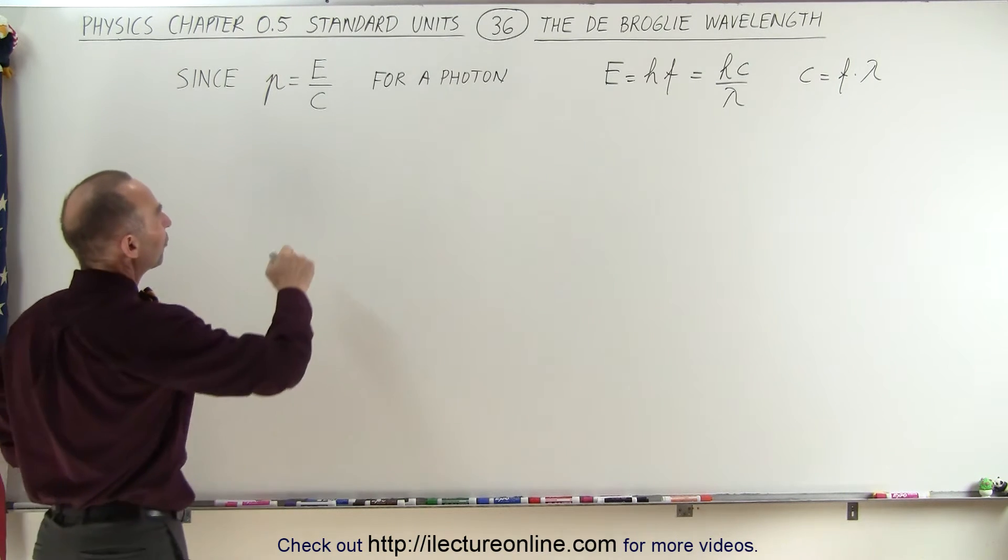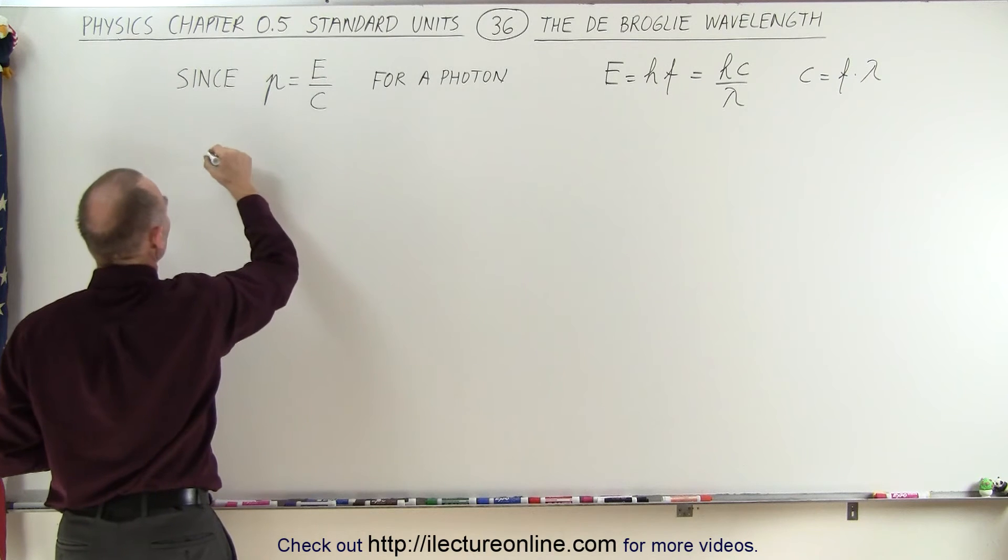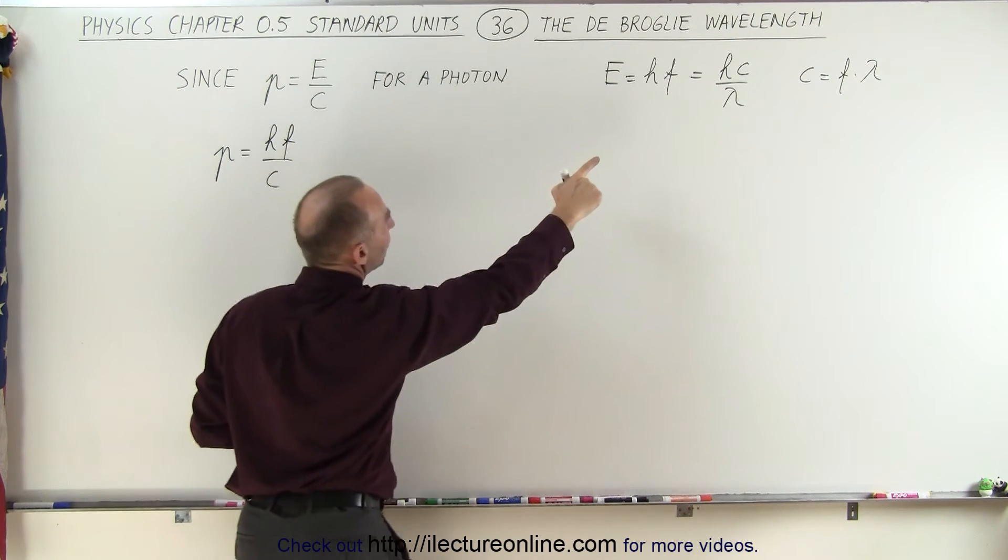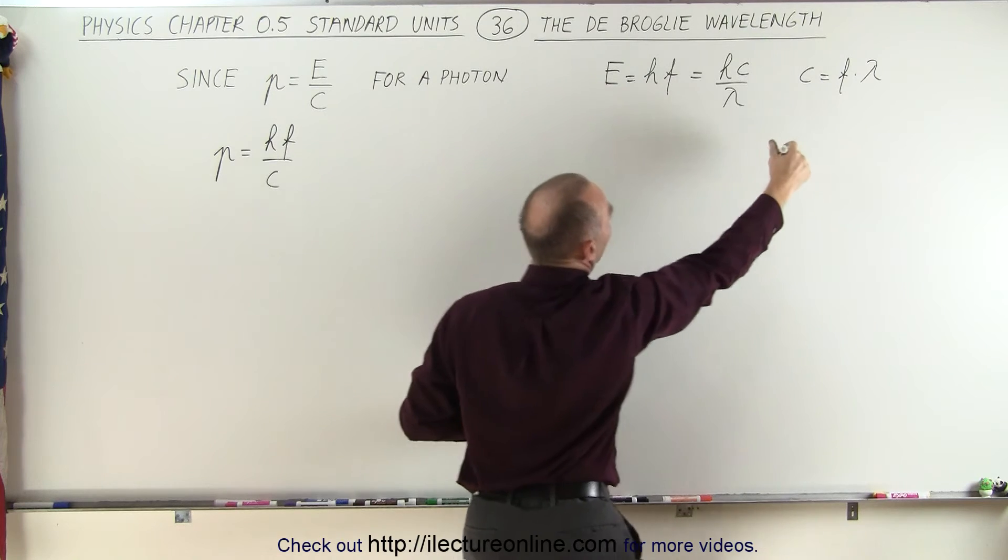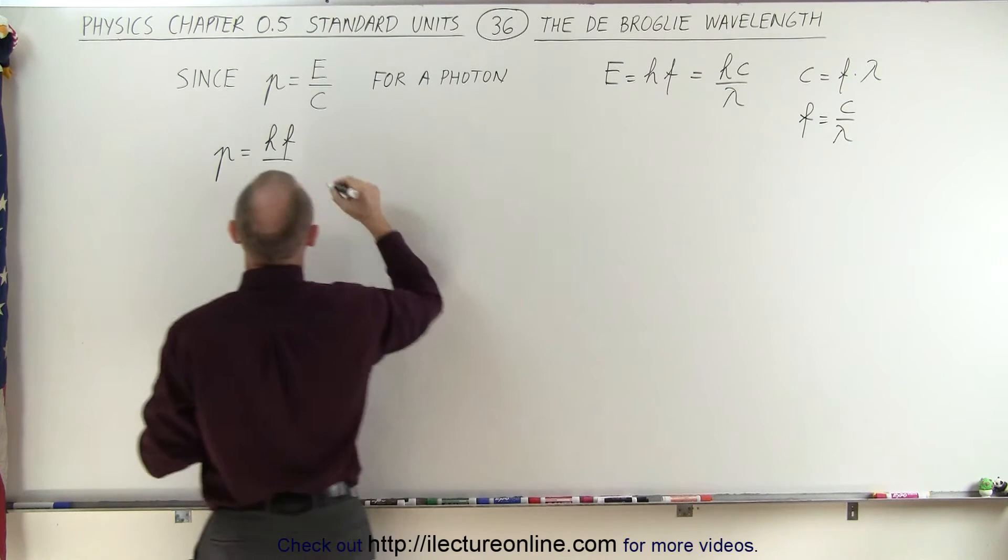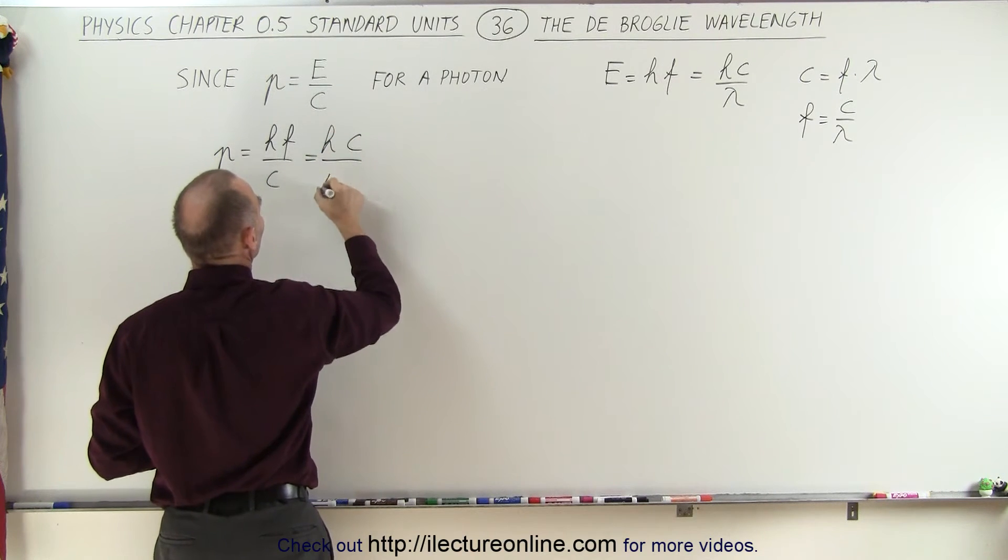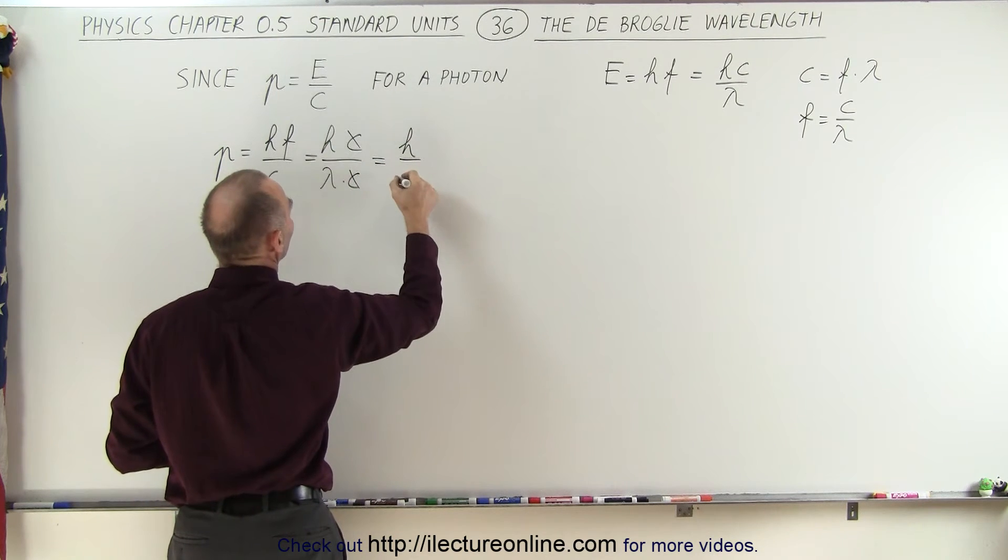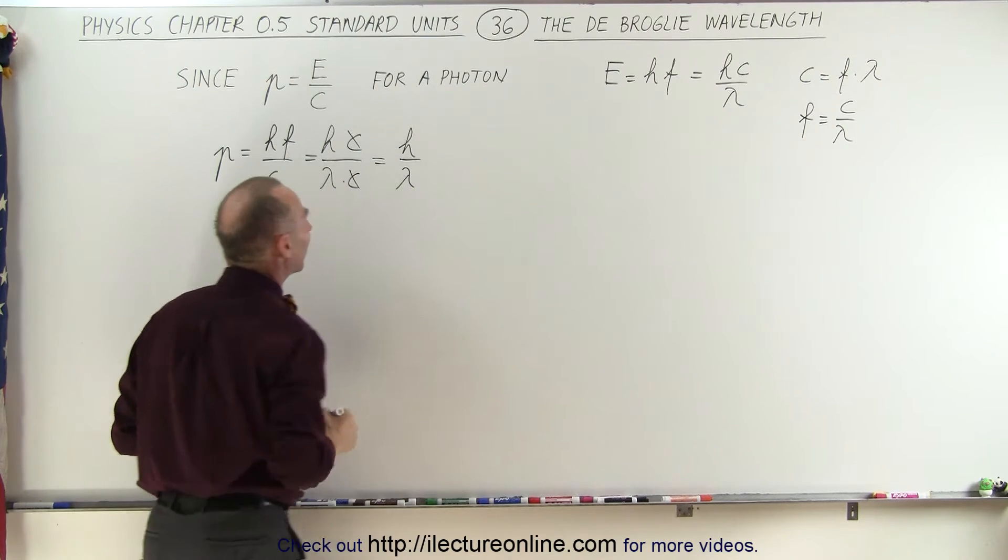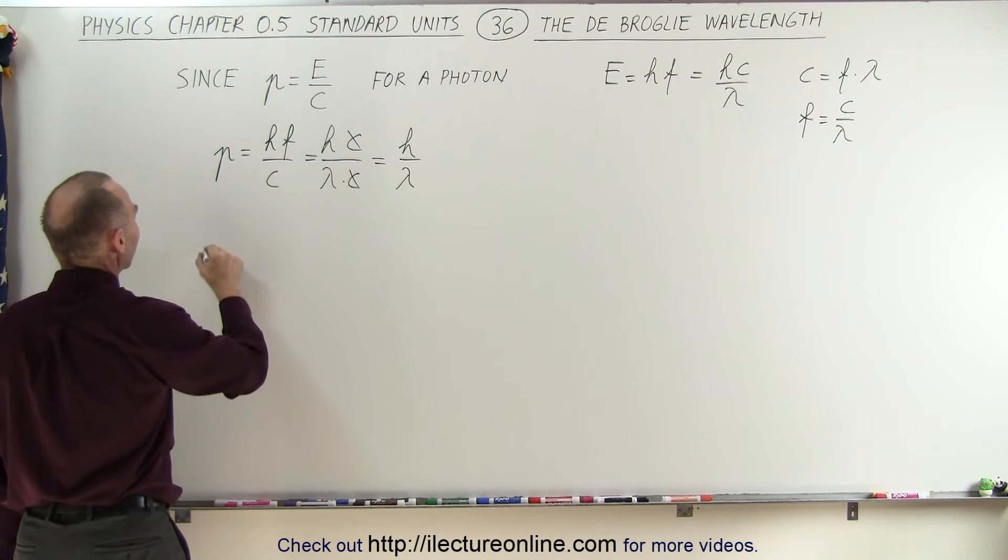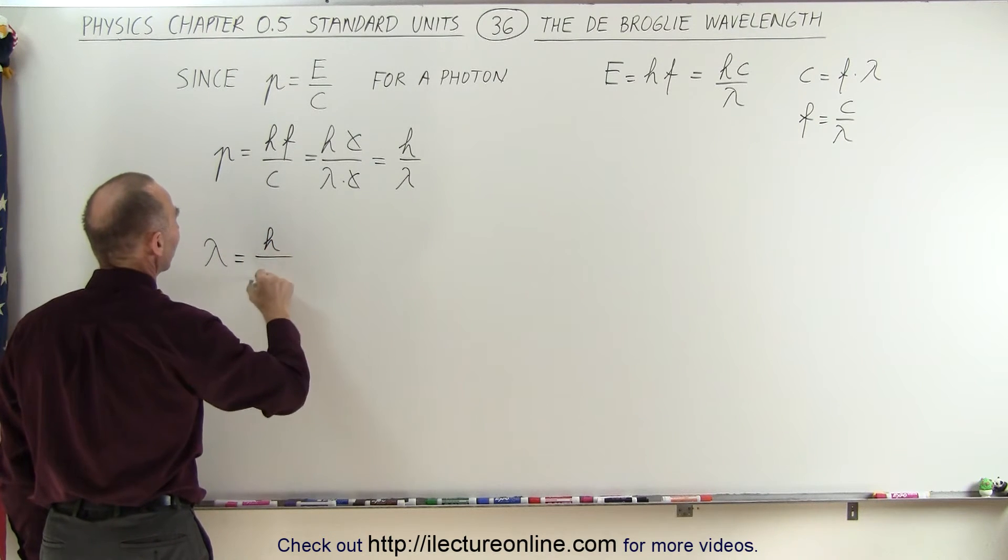Well, let's see how that worked. First of all, we know that energy is equal to h times f, so the momentum of a photon can be written as the Planck's constant times the frequency divided by the speed of light. And since f can be written as c over lambda, we can then write this as h times c over lambda times c, and the c's cancel out, so the momentum of a photon can be written as the Planck's constant divided by the wavelength of that photon, which means that the wavelength of the photon can be written as Planck's constant divided by the momentum.